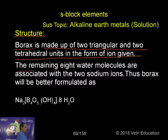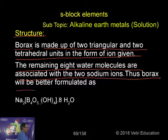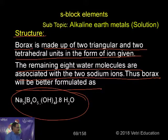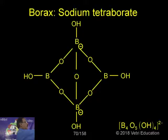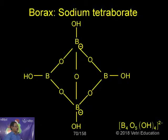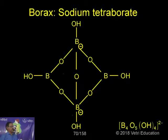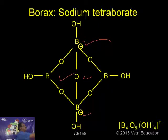Thus, borax will be better formulated as Na2[B4O5(OH)4]·8H2O. That is the structure of borax — sodium tetraborate. It consists of two triangular units and two tetrahedral units. You can think of two tetrahedra and two triangles in the structure.